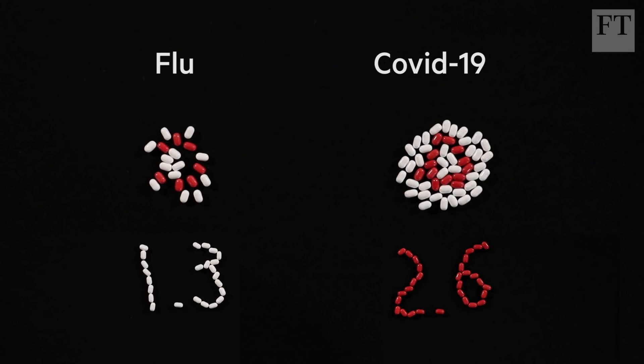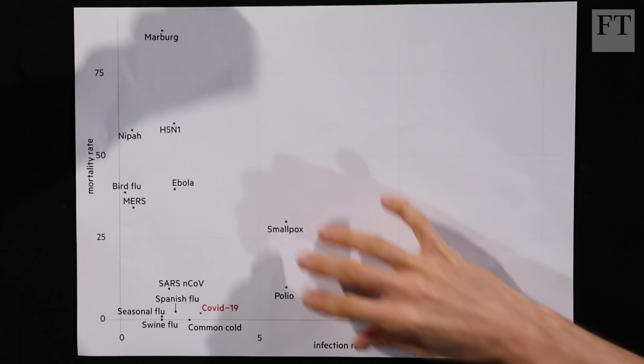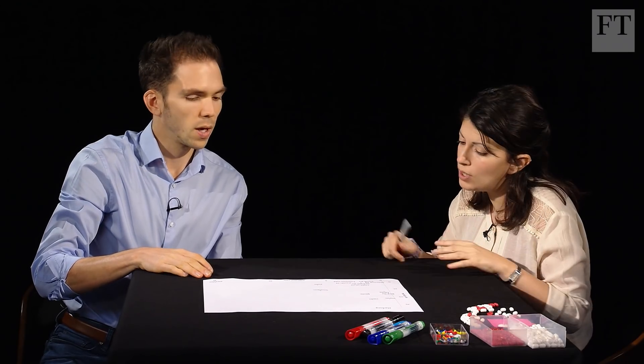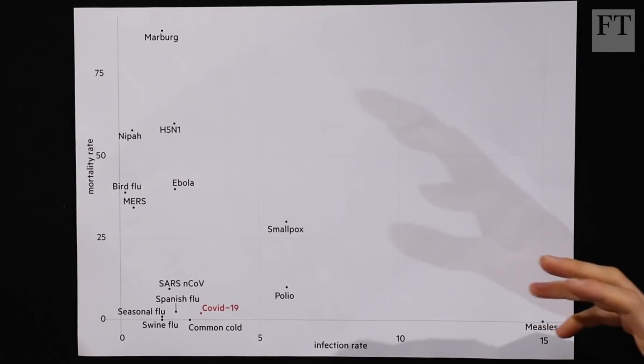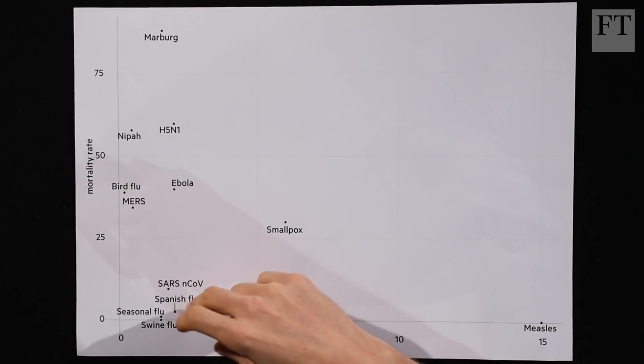This is the R value — how many people are infected by one person. If it's below one, the disease is not contagious. On a chart comparing infectiousness on the horizontal axis, measles is very infectious, as is polio. The current coronavirus strain sits at about 2.6, while common cold and seasonal flu are less infectious.